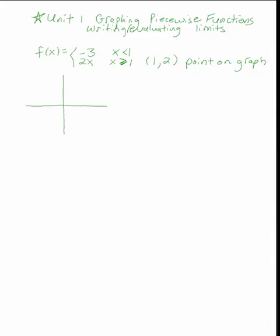Now look at the top part of the equation — it's just negative 3 if x is less than 1. I'm not allowed to plug 1 in there, but the key is that I plug in the 1 anyways. It outputs negative 3 because there's no variable to substitute. Since I'm not allowed to plug in 1, that point won't be filled in — it's going to be a hole. So 1 comma 2 is a point on the graph and 1 comma negative 3 is a hole.